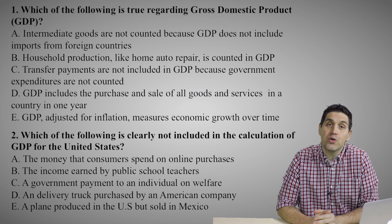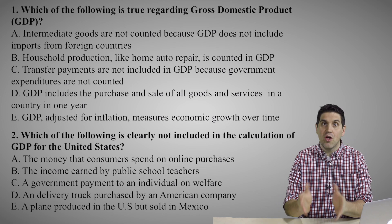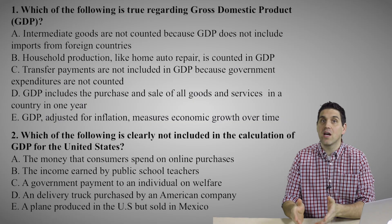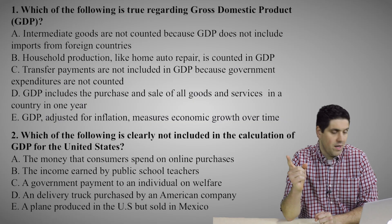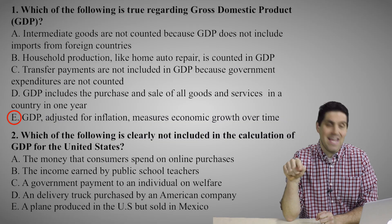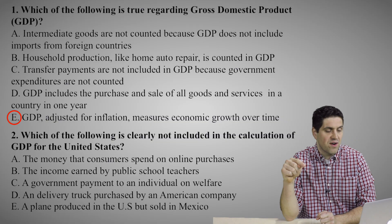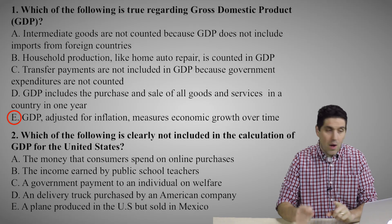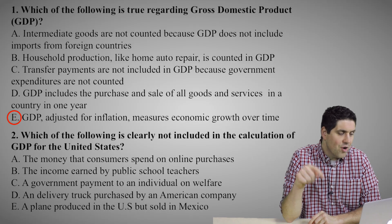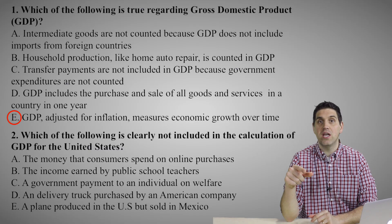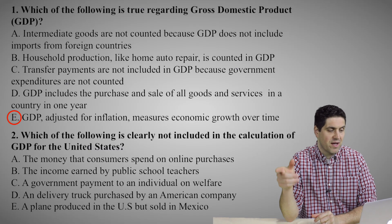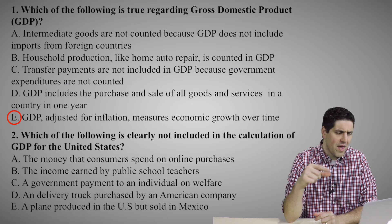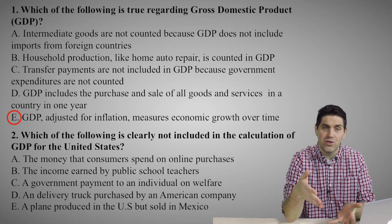Question number one: which of the following is true for the gross domestic product, GDP? Remember, GDP is the dollar value of all final goods and services produced within a country's borders in one year. The right answer is E — GDP adjusted for inflation measures economic growth over time. For answer A, intermediate goods are not counted, but it has nothing to do with imports not being counted, because imports do count towards GDP — they're counted as a negative.